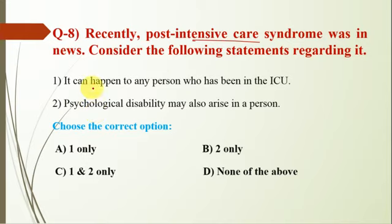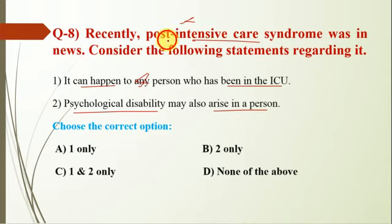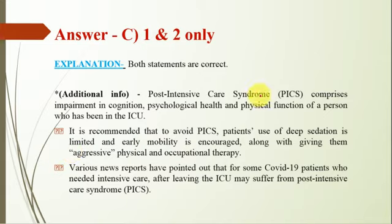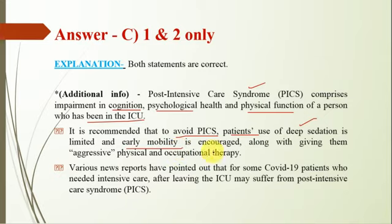Question number 8: post intensive care syndrome was recently in the news. Consider the following statements. One: it can happen to any person who has been in the ICU. Two: psychological disability may also arise in a person. These questions check your common sense. Both statement one and statement two are correct, so the option will be C. Post intensive care syndrome comprises impairment in cognition, psychological health, and physical function of a person who has been in the ICU. It is recommended that deep sedation be limited, early mobilization be increased, and patients be given aggressive physical and occupational therapy. New reports indicate that some COVID-19 patients who needed intensive care may suffer from post intensive care syndrome after leaving the ICU.